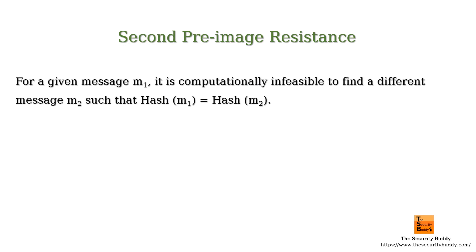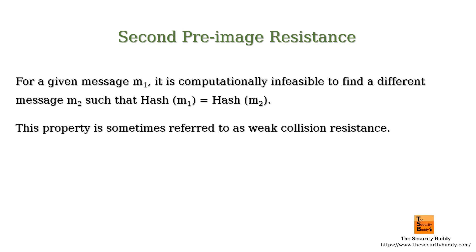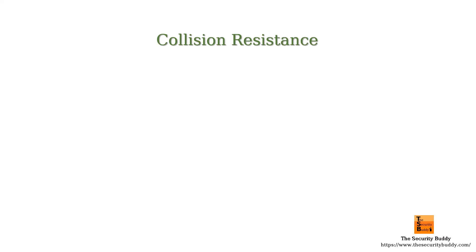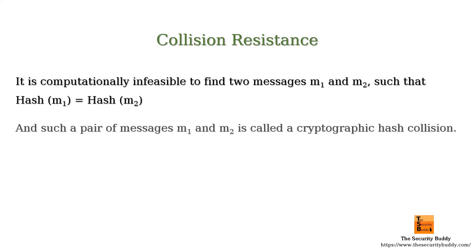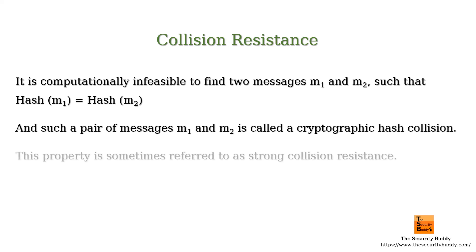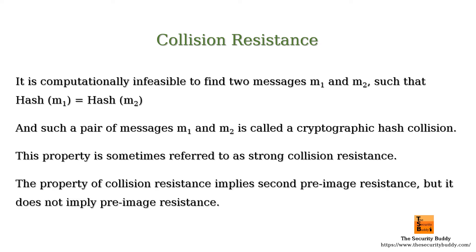As per the second preimage resistance property, for a given message M1, it is computationally infeasible to find a different message M2 such that hash of M1 is equal to hash of M2. Such a pair of messages M1 and M2 is called a cryptographic hash collision. This property is sometimes referred to as strong collision resistance. Note that the property of collision resistance implies second pre-image resistance, but it does not imply pre-image resistance.